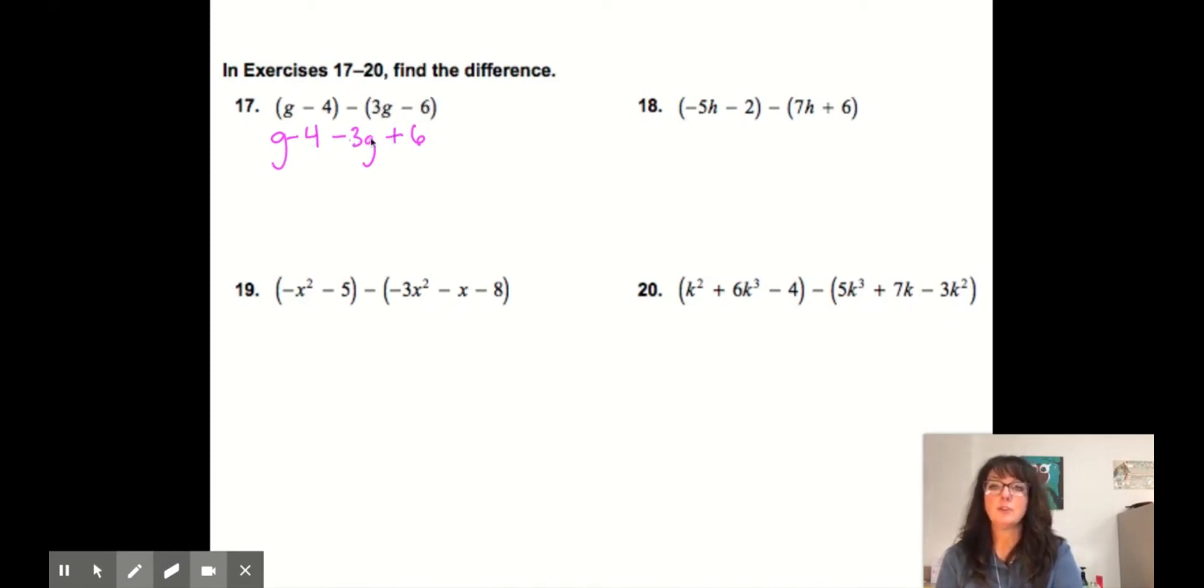So notice how what's inside the parentheses when it is after subtraction is the opposite of what it was. It was positive g. Now it's negative. Positive 3g. Now it's negative 3g. Was negative 6. Now it's positive 6. So now first term was the variable with an exponent of 1. And then the constant. So 1 plus negative 3 is going to be negative 2g. Negative 4 plus 6 is plus 2.